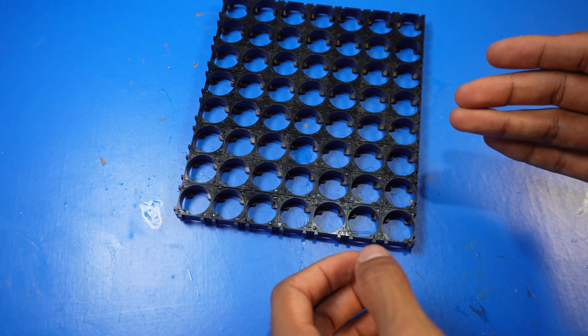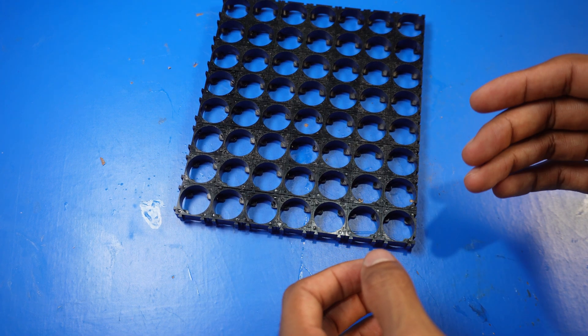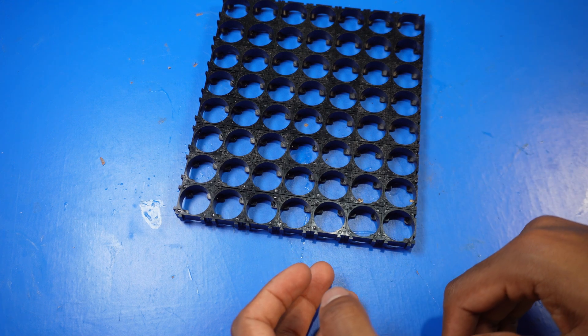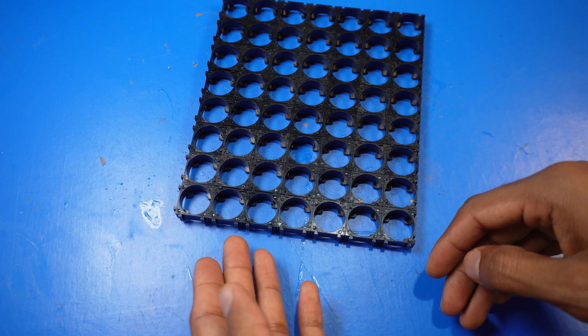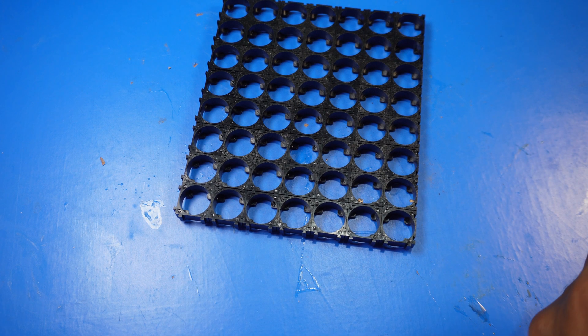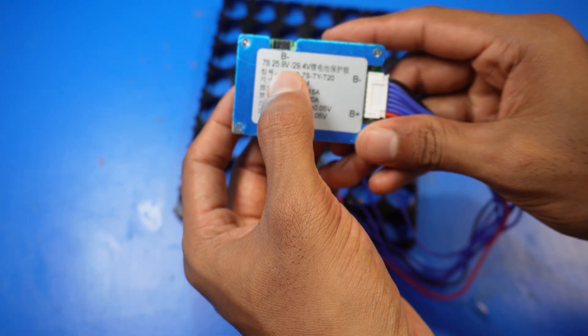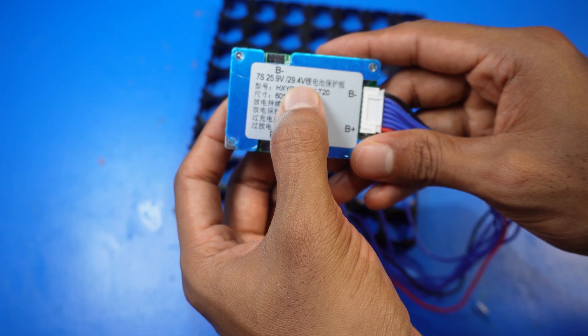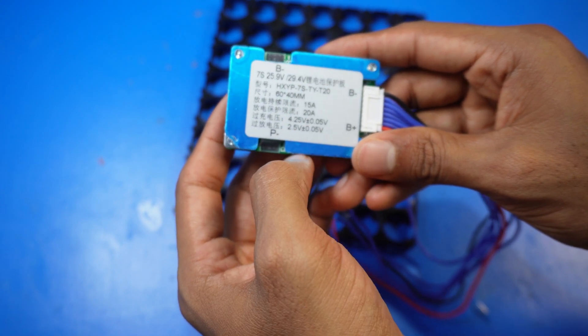These are 2000 mAh batteries, so 8 of these in parallel will add up to 16 AH in a 24V system. I have a BMS which is 25.9V at the minimum to 29.4V at maximum.